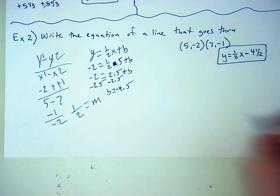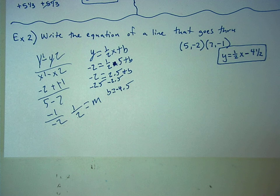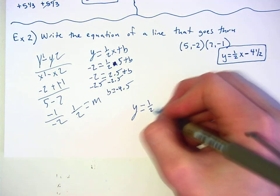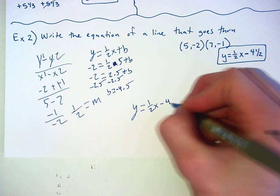And then you plug that back into the original equation: y equals one half x minus 4.5, or plus negative 4.5.